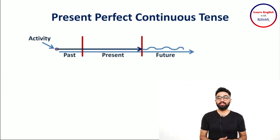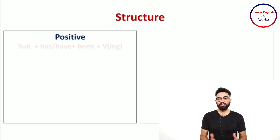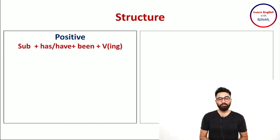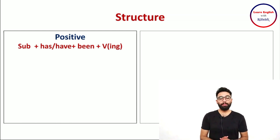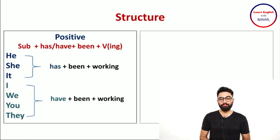Let's understand the structure. Starting with the positive category: the structure is subject plus has or have plus been plus the -ing form of the verb. The subject can be nouns or pronouns. If the subject is singular, we use has; if the subject is plural, we use have. With pronouns: he, she, and it take has, while I, we, you, and they take have.